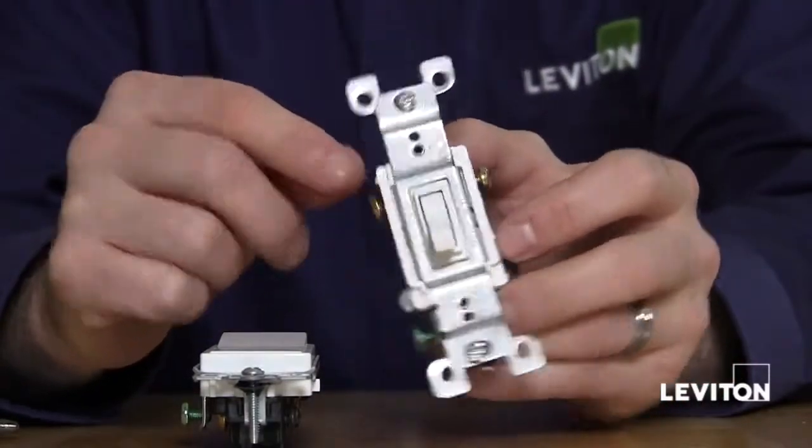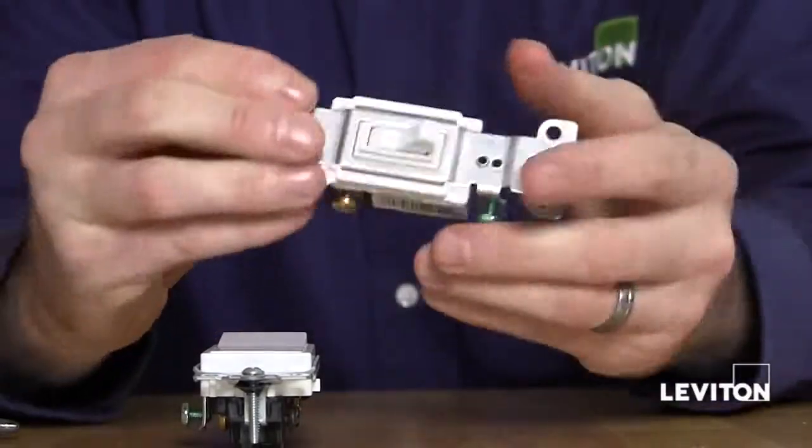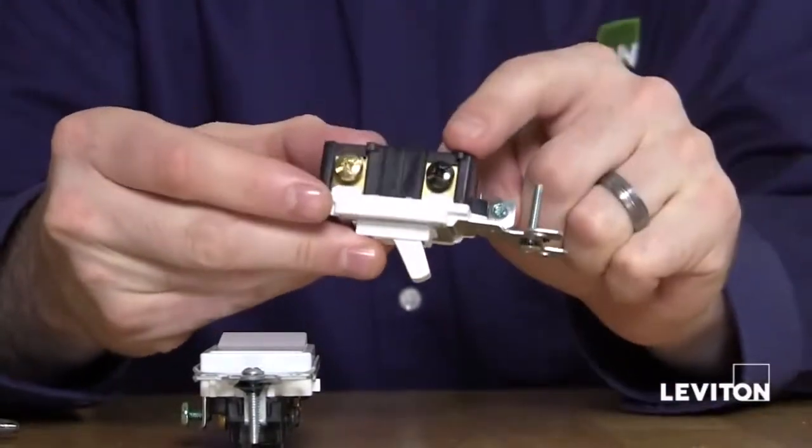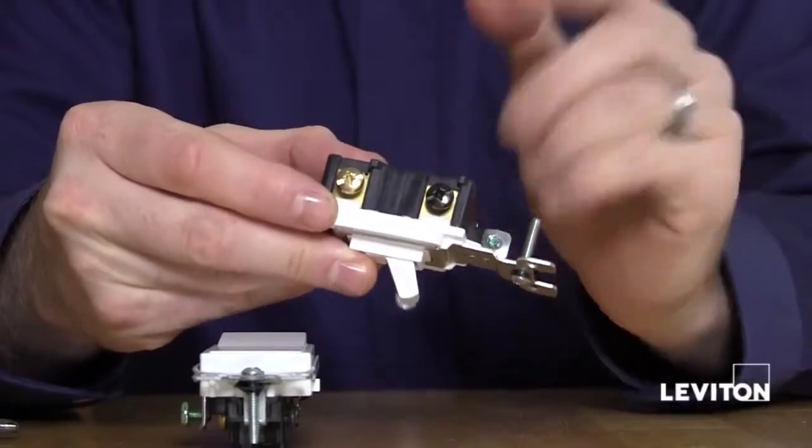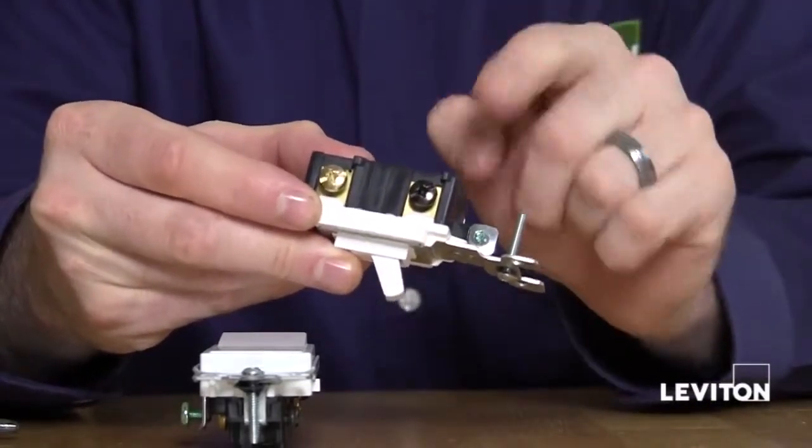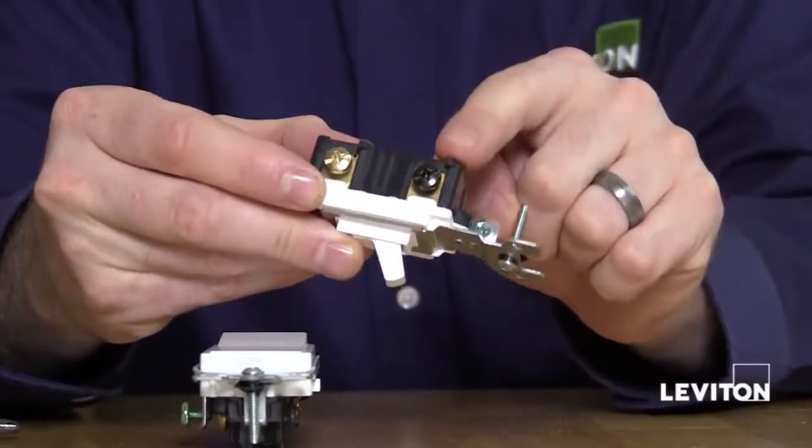It's called a three-way switch because it has three terminals. The black screw is for your line or your power wire, or your load wire, which is the wire that goes to your light.